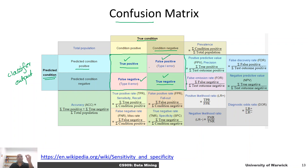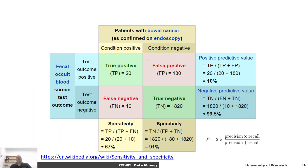The confusion matrix tells us how many false positives, true negatives, and all those types of errors there are — the number of those. We can also calculate their percentages and express that. Let's take a concrete example: let's say we've got patients for which we do a fecal occult blood test.